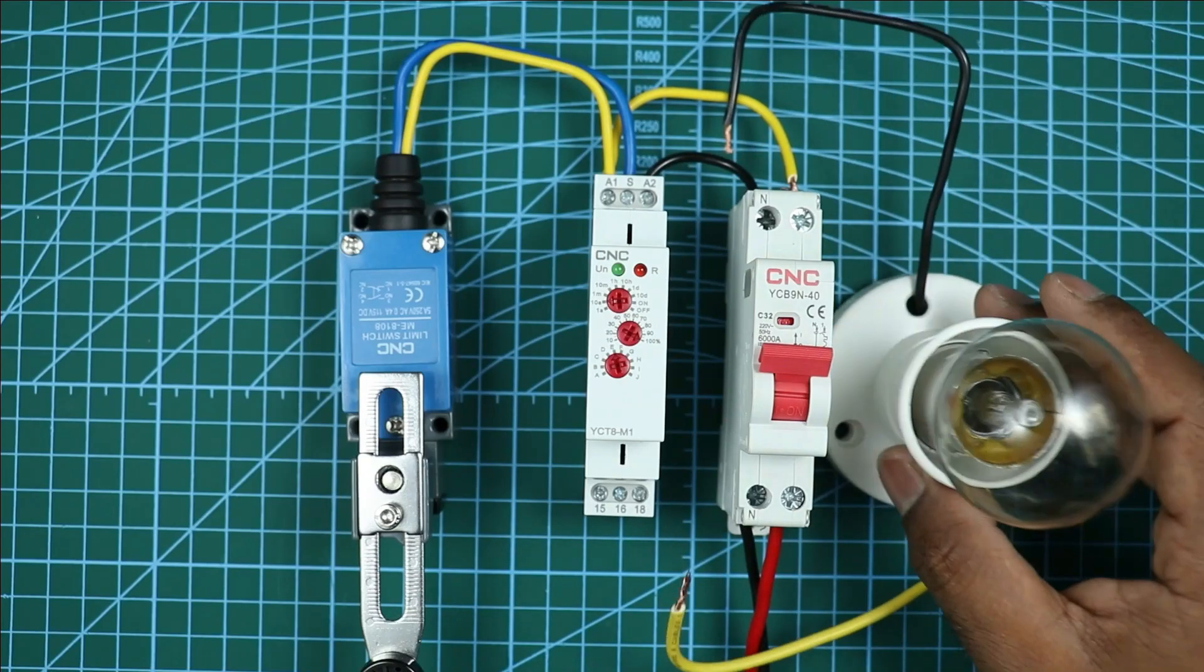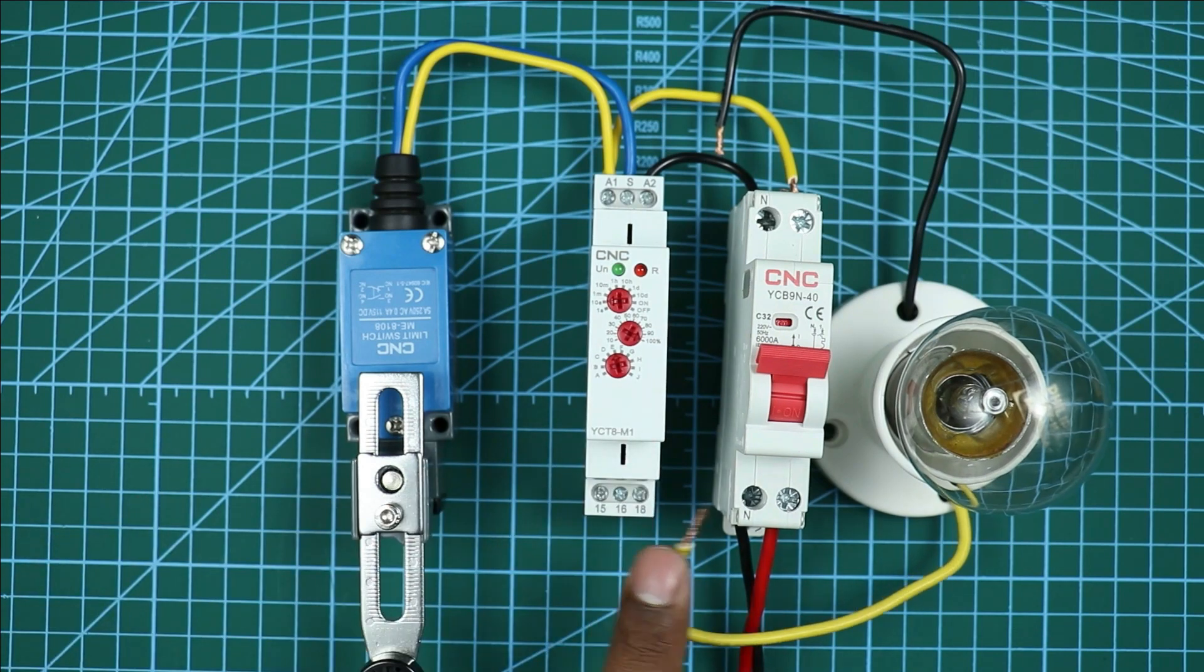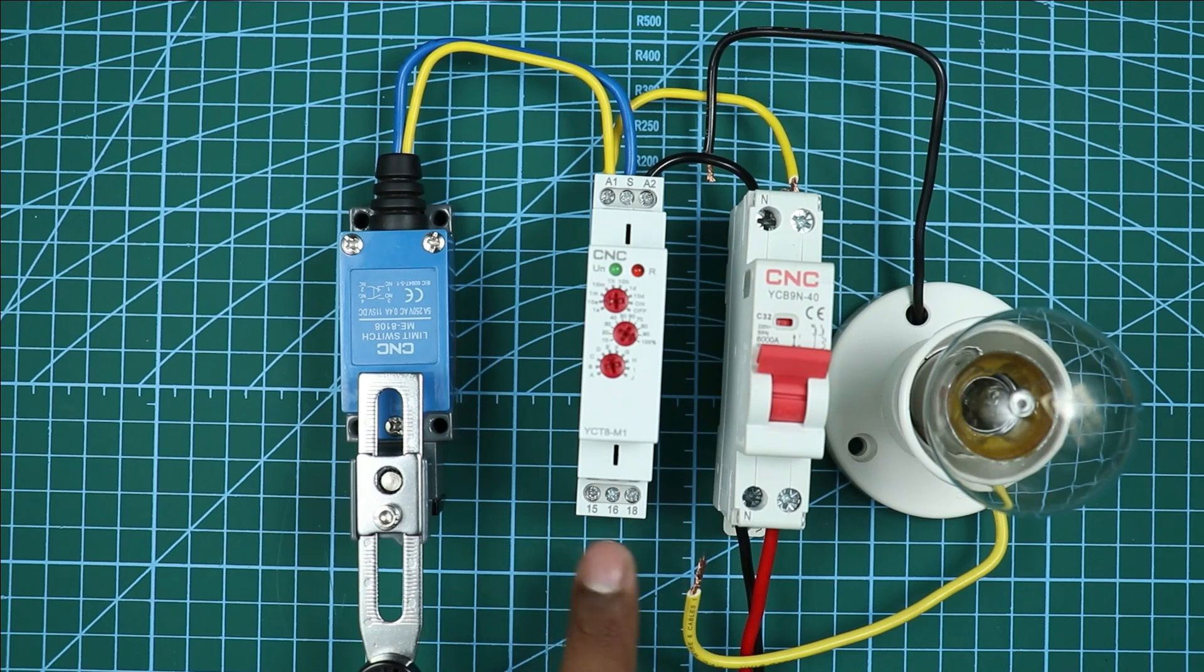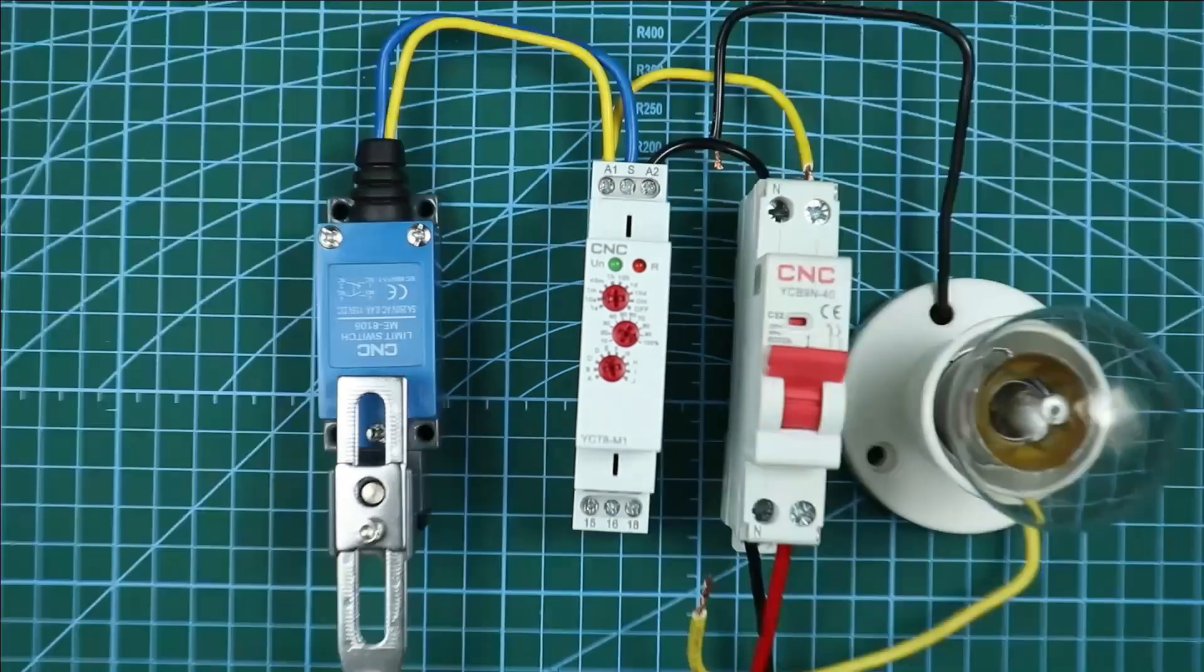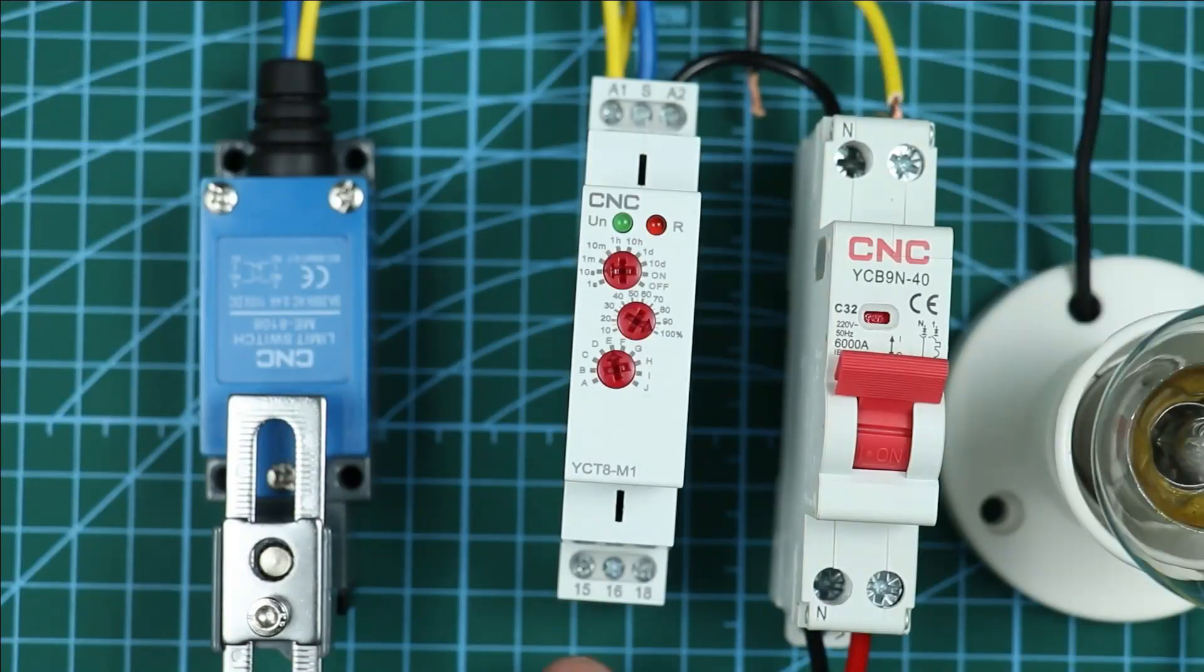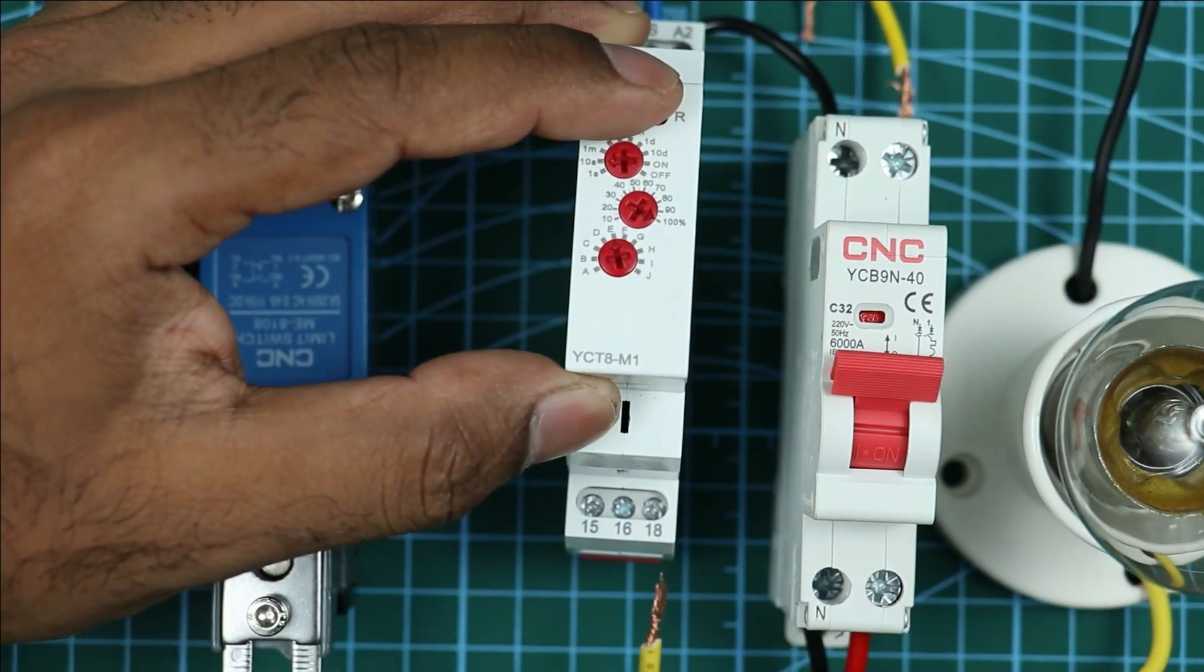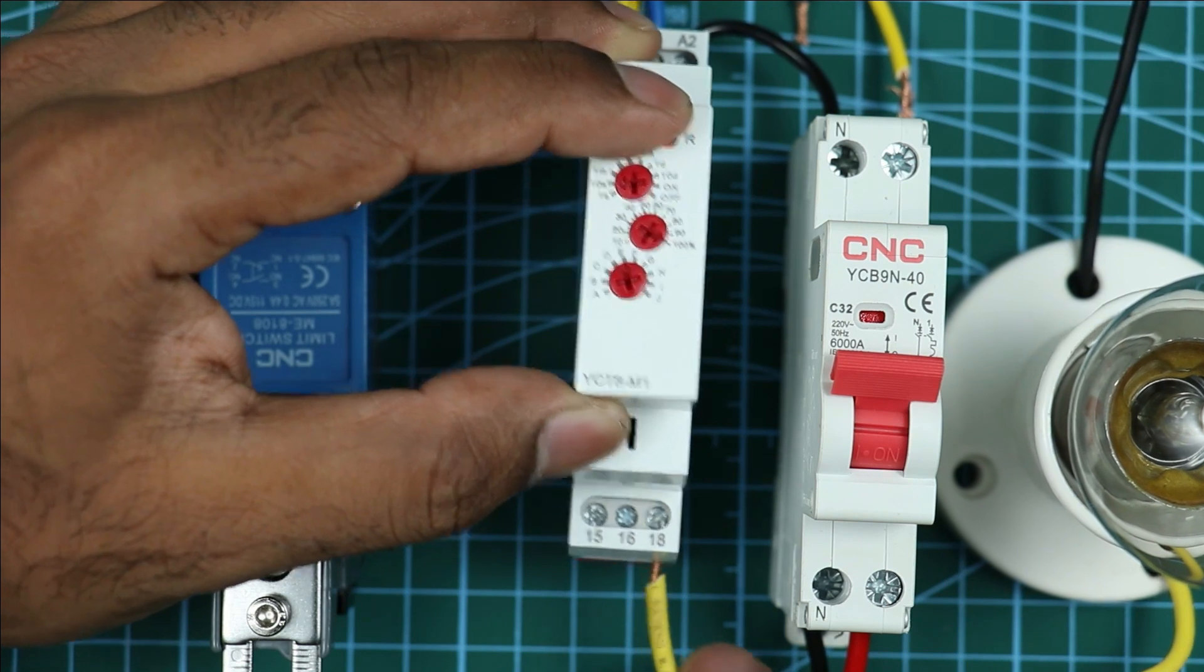Now I want to glow this lamp through this timer. For this, you have to use the NO contact of the timer. When you look at this timer, here 15, 16, 18 - three terminals are present. Among these, 18 and 15 number terminal is for NO contact. What I will do is phase supply wire of the lamp is to be connected with 18 number terminal of timer.